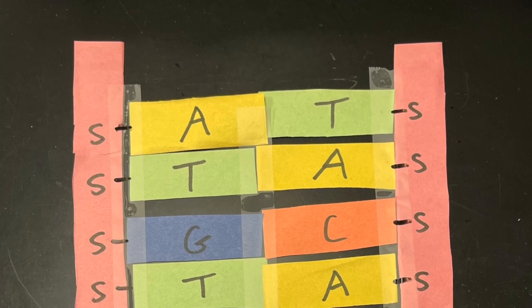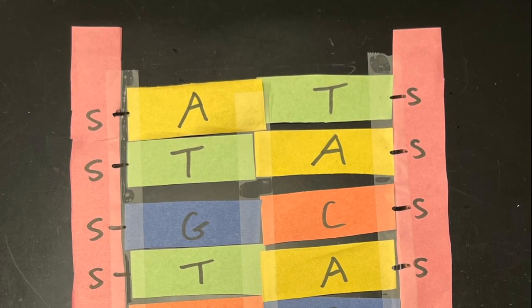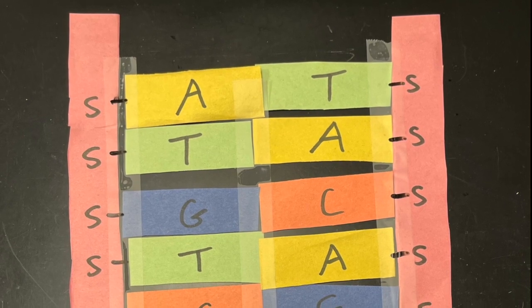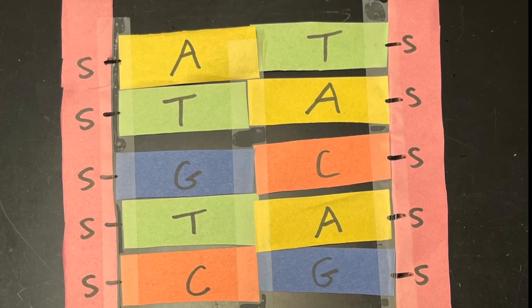Then on the outer side you want to make horizontal lines coming out from each of those bases, the A's, T's, C's, and G's, that go towards those long strips you put on the left and the right, in my case pink.